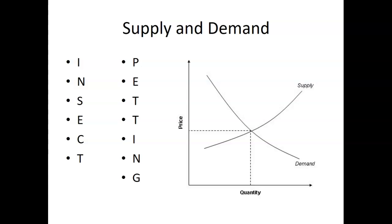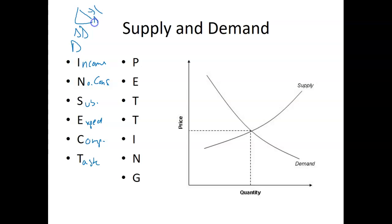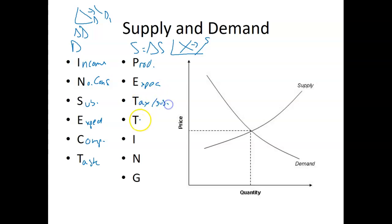Supply and demand. The acronym I use is INSECT and PETTING. For INSECT, on the demand side, we have: Income, Number of consumers, Substitute goods, Expectations, Complementary goods, and Taste and preference. These are changes in demand, meaning the demand curve itself shifts left or right. For PETTING on the supply side, we have: Productivity, Expectations, Taxes and subsidies, Technology, Input cost, Number of suppliers — which means increasing firms in the overall industry supply curve — and Government regulation.